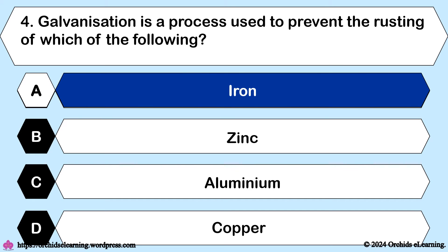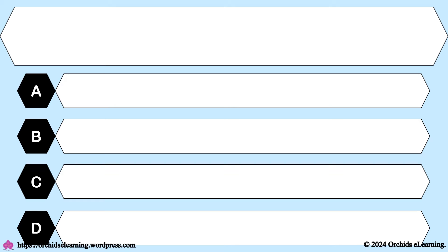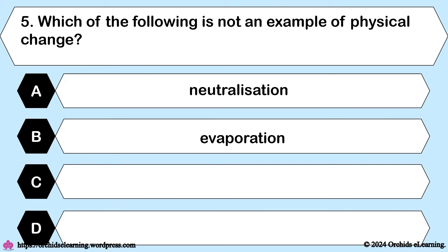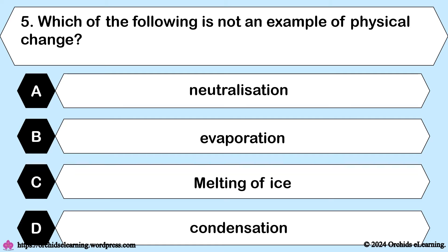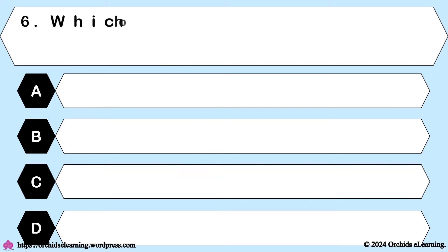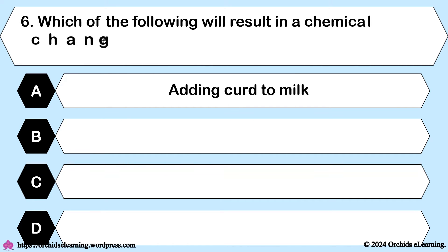Answer: A — Iron. Which of the following is not an example of a physical change? Answer: A — Neutralization. Which of the following will result in a chemical change?